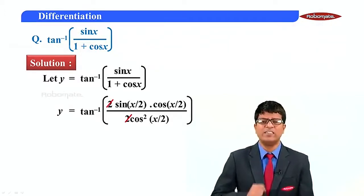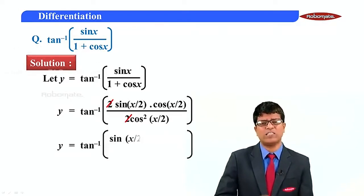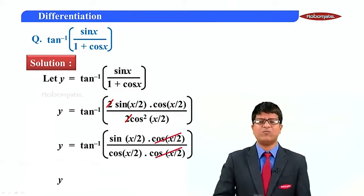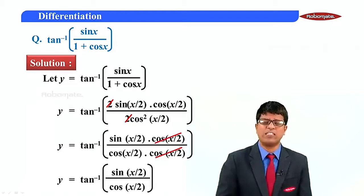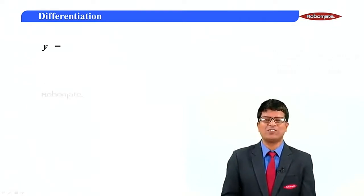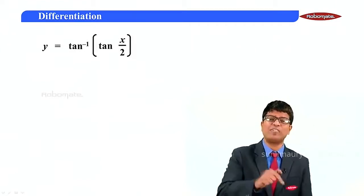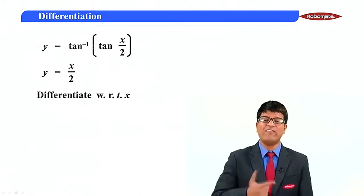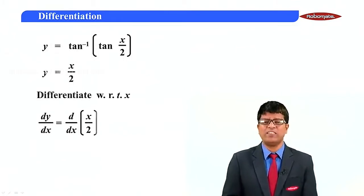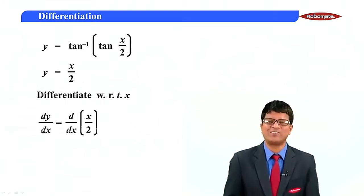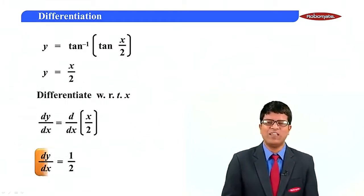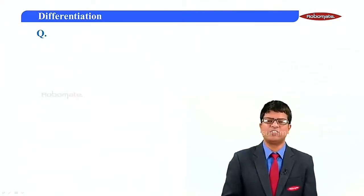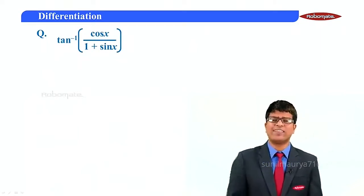We are left with tan inverse of sin(x/2)cos(x/2) upon cos²(x/2). One cos cancels, leaving tan inverse of sin(x/2) upon cos(x/2), which is tan inverse of tan(x/2). Since tan inverse of tan(x/2) equals x/2, differentiating with respect to x gives dy/dx = d/dx of x/2, so dy/dx equals one half.